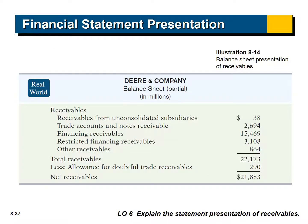As an example of how receivables appear on actual financial statements, this is Deere and Company — like John Deere. Notice the different receivables accounts listed, and then we subtract out the allowance separately.